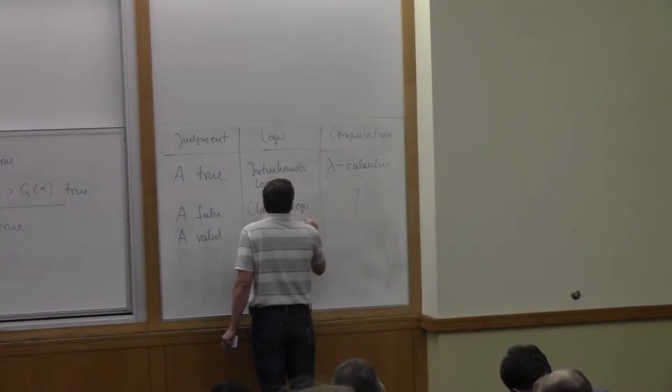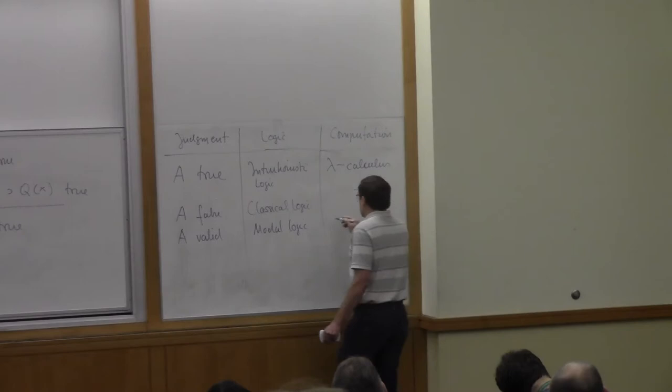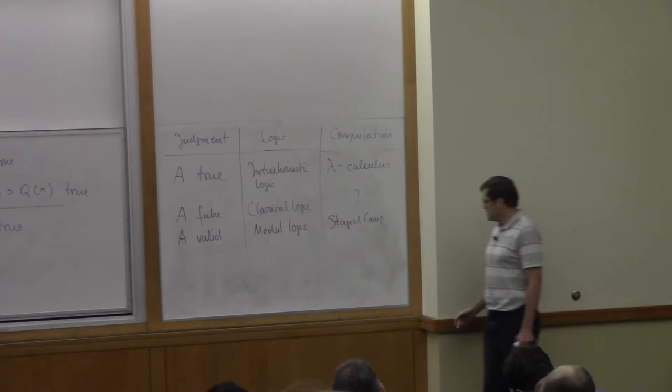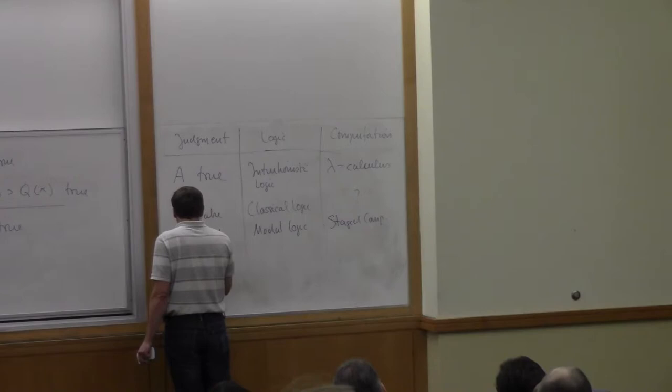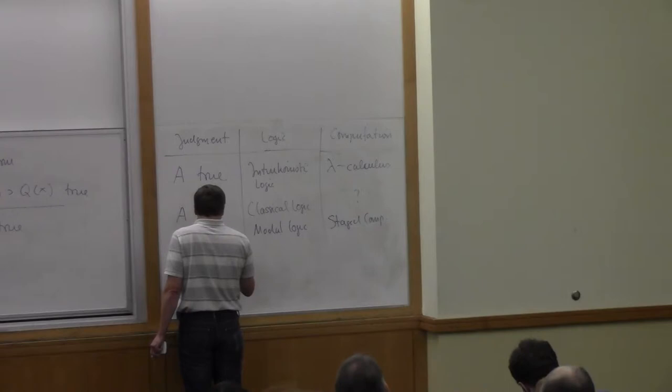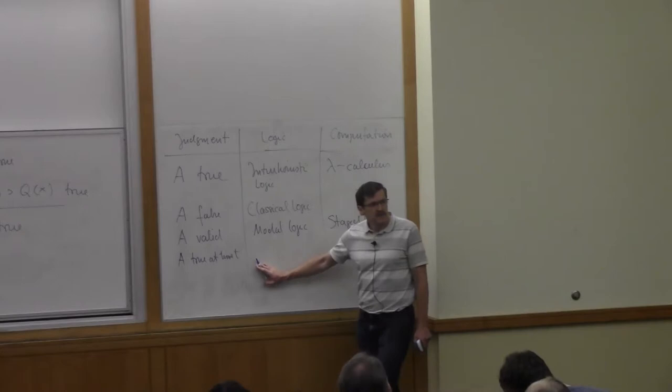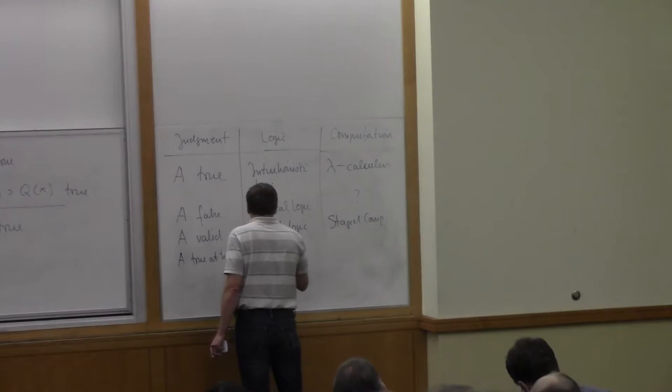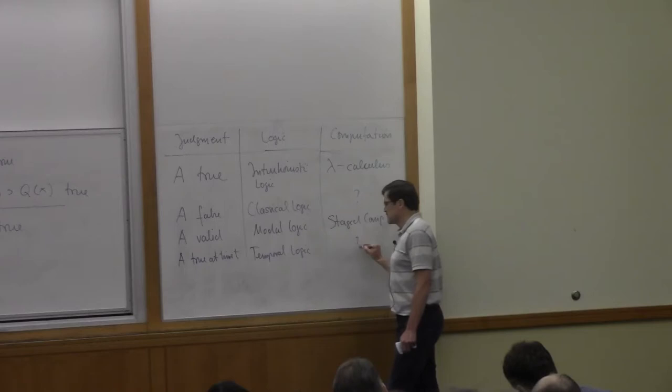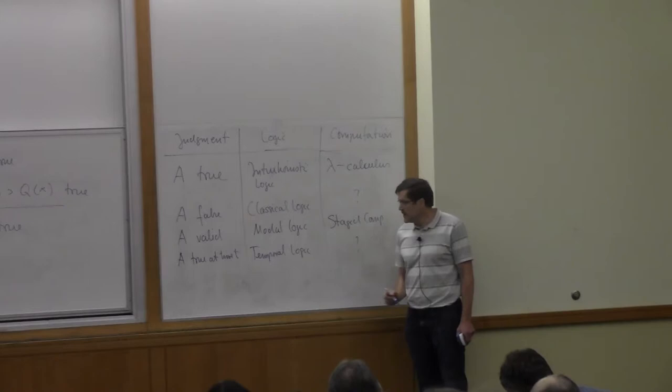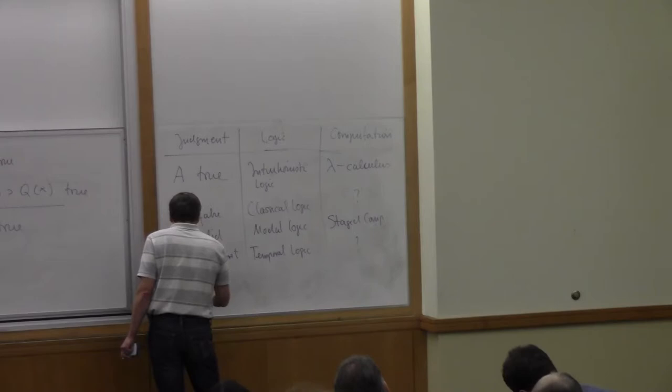If we do that, then we get something called modal logic. There's a whole bunch of different computational interpretations of modal logic. For example, it can refer to staged computation, runtime code generation, and so on. And there's more here. I'm going to ask you for homework to define the judgment A is true at time t and the propositions that go along with that. This is going to correspond to something called temporal logic. I'm not going to give away this. Because hopefully, after three lectures, you can arrive where that should be. There's a computational interpretation of temporal logic, and it's pretty interesting.